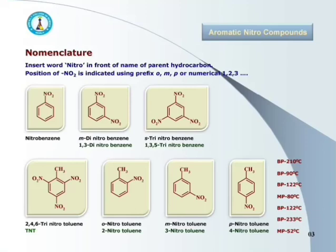Now, switching over to the nomenclature of aromatic nitro compounds: aromatic nitro compounds are named by inserting the word 'nitro' in front of the name of the parent hydrocarbon. The position of the nitro group is indicated by using the prefixes ortho, meta, para — that is O, M, or P — and also by using numerals such as 1, 2, 3, 4, and so on.